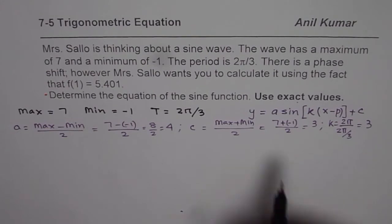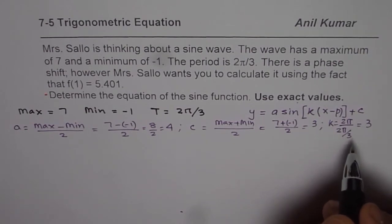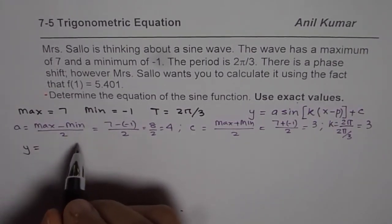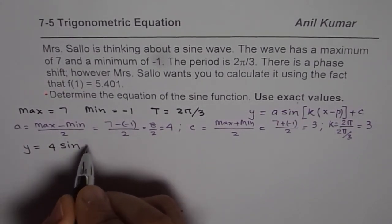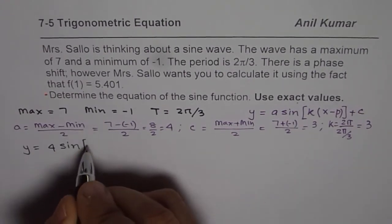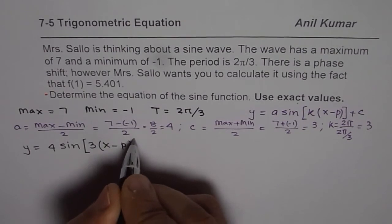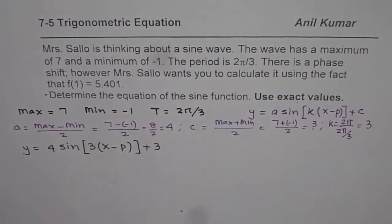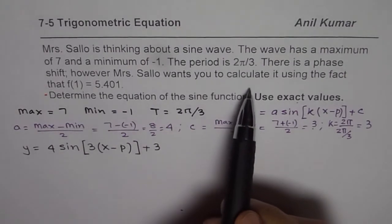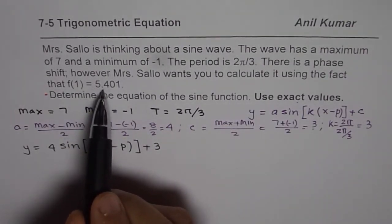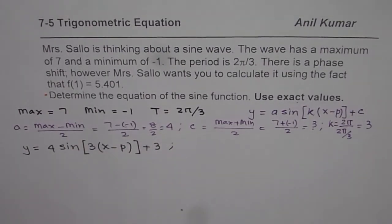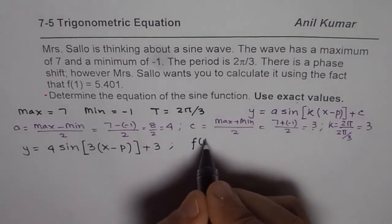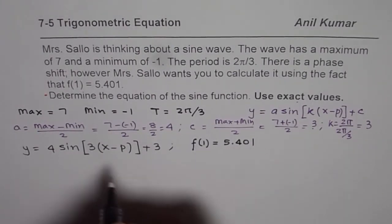Once we get all these values we can put them there and next step will be to find the value of p. Remember we have to find this phase shift as an exact value. All of the values are exact for us. So we can write y = 4 sin(3(x - p)) + 3. Now we are given the fact that f(1) = 5.401, so we are going to use that fact to find the phase.